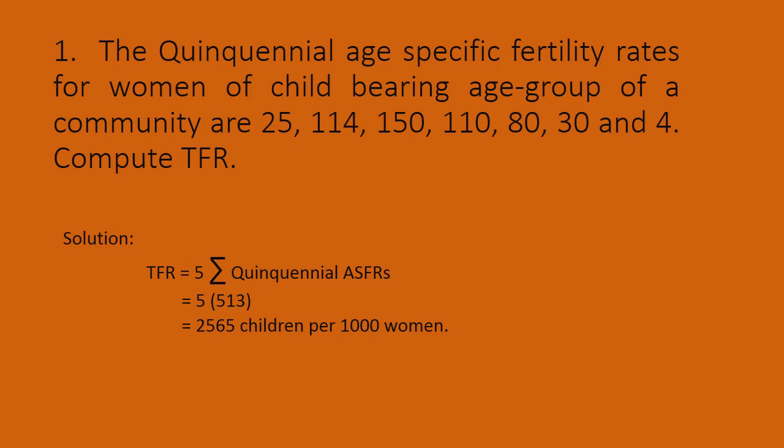The total fertility rate covers the age group from 15 years to 49 years. For every 1000 women, 2565 children are born. Dividing 2565 by 1000 gives approximately 2.565, which represents the fertility rate per woman.